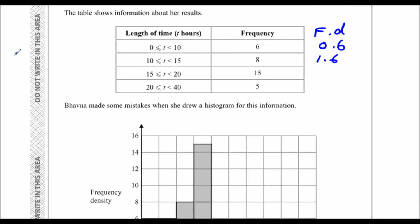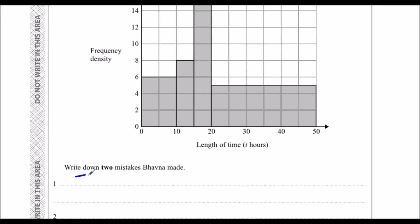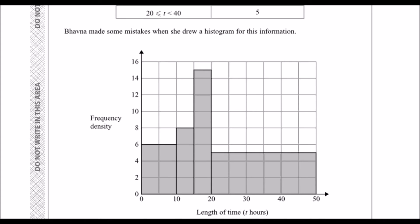All they've done is plotted the frequency up the side. So they have plotted frequency, not frequency density. They've plotted the wrong thing up the y-axis.